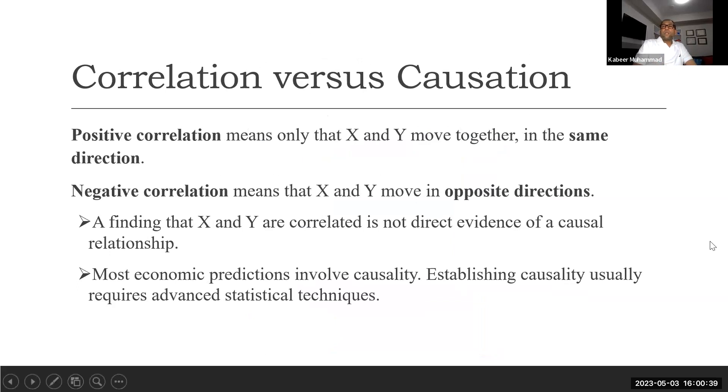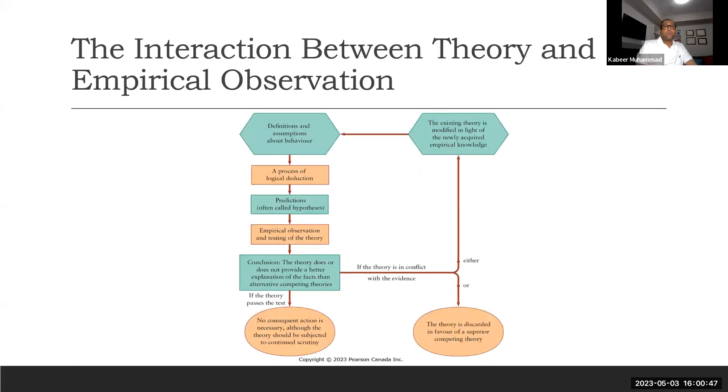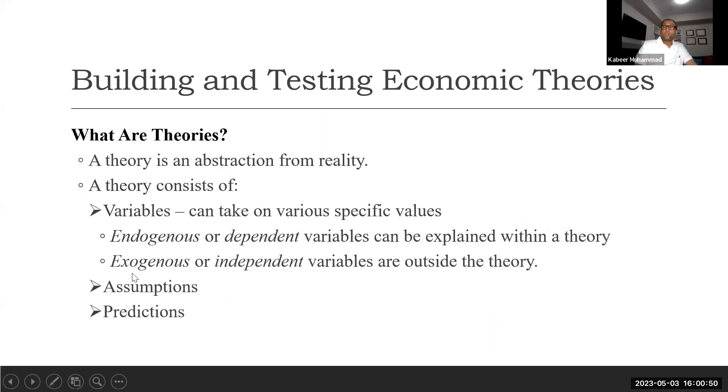Now, a very common thing we observe in economics is the relationship between variables. We just discussed that there are two types of variables: endogenous and exogenous. Endogenous means dependent, and exogenous means independent. Just to understand the idea of endogenous and exogenous or dependent and independent...